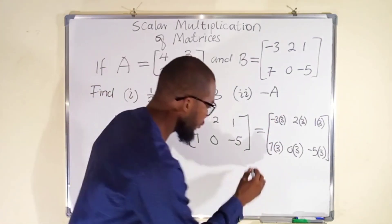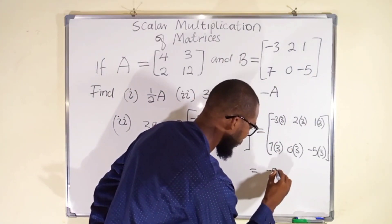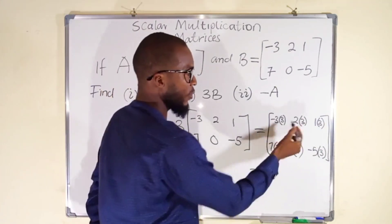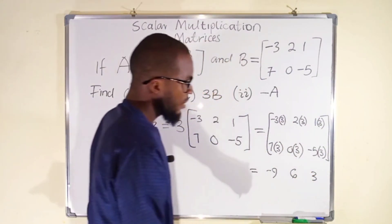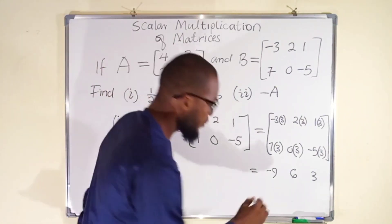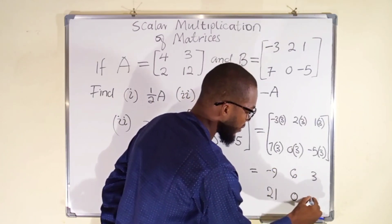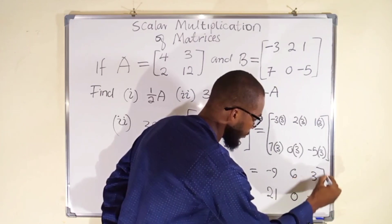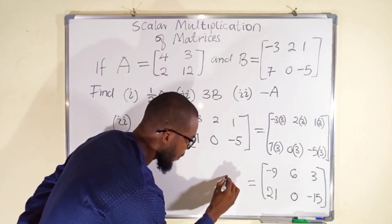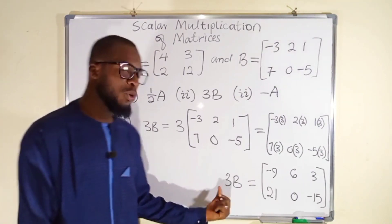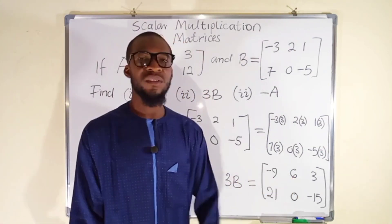Now let us simplify every entry. Negative 3 times 3 is negative 9. In column 1 we have negative 9; 2 times 3 is 6; and 1 times 3 is 3. In the second row, 7 times 3 is 21; 0 times 3 is 0; and negative 5 times 3 is negative 15. So 3B is equal to the matrix [−9, 6, 3; 21, 0, −15]. Once you multiply the entries of matrix B by the real number 3, you obtain this new matrix.